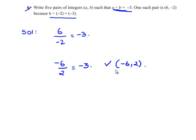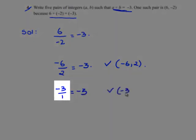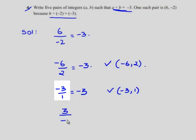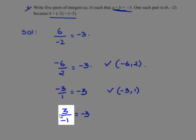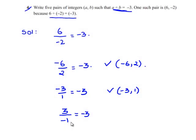Similarly, we can take the example of when negative 3 is divided by 1, we get negative 3. The example is negative 3 comma 1. We can also write it as when 3 is divided by negative 1, we get negative 3. Since the signs in the numerator and denominator are opposite, we get a negative sign. Therefore another example is 3 comma negative 1.